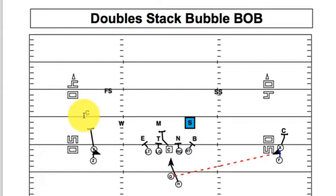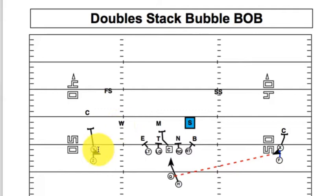As the quarterback comes to the line, he takes a quick peek at the stack on the front side: does he have good numbers to run the bubble? No, he does not. The main reason is the Will linebacker has widened and is at least halfway splitting the distance between the Y and the tackle, and the corner is down. So they have two-on-two, which is not good numbers — the Y can only block one, and the double Will could come in and make a play.